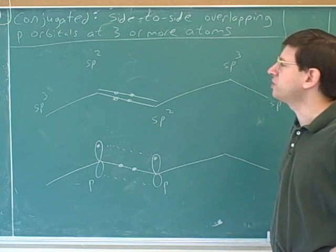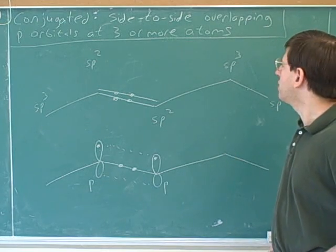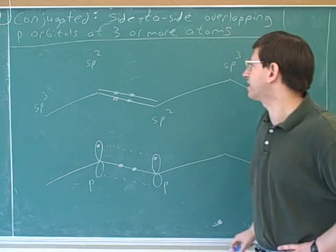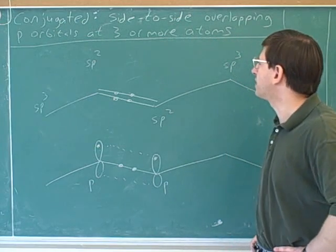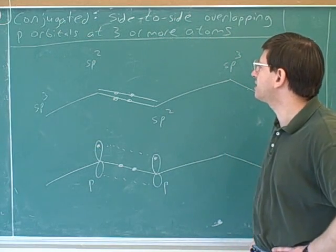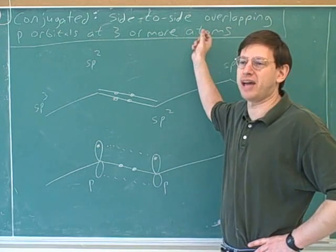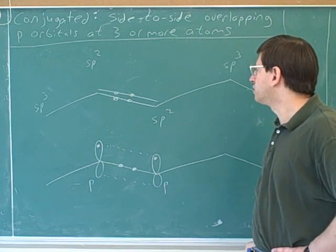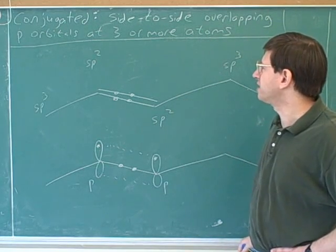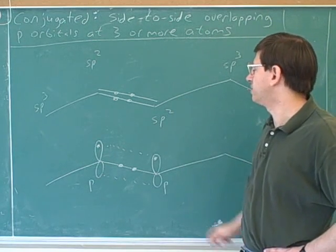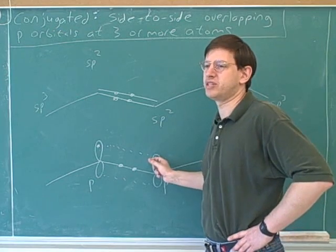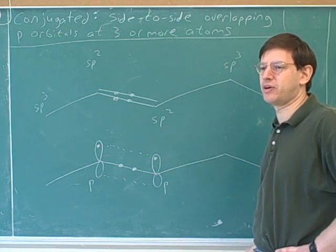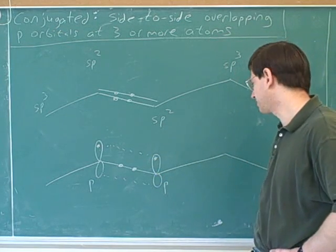Now, this molecule is not conjugated, even though it does have side-to-side overlapping P orbitals. It's not conjugated because it only has the side-to-side overlapping P orbitals at two atoms. A single pi bond does not make a molecule conjugated. If we could get a third atom in the mix, then we would have conjugation.